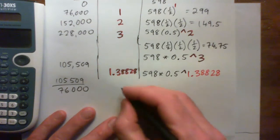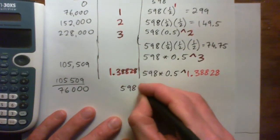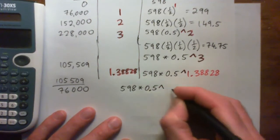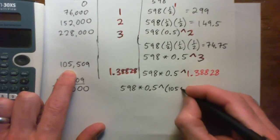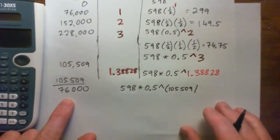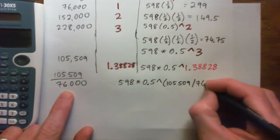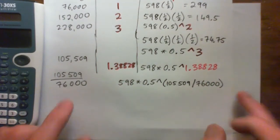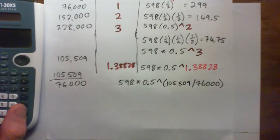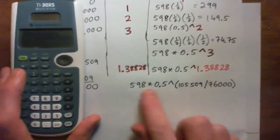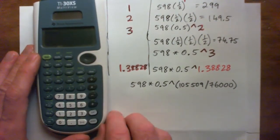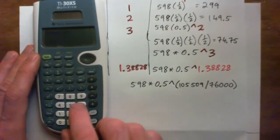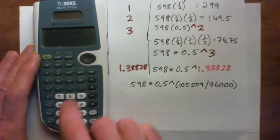But an even more accurate way, of course, is to go 598 times 0.5 to the power of, and in parentheses, put our 105,509 divided by 76,000. Now, if you plug this entire thing in, that gives you a most accurate result. And you can do it this way, too. I'm sure it'll be fine on the test. But this is the most accurate way. I'm just going to do it that way for fun. So, 598 times 0.5 to the power of 105,509 over 76,000.